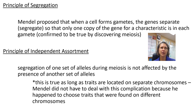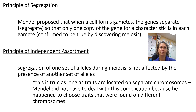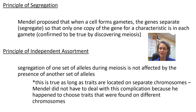The last principle is independent assortment. This says that one set of characteristics is not affected by the other set. Just because a plant is tall doesn't mean it will also have green pods, and just because it is short doesn't mean its pods will be yellow — they're always separate. This is true as long as the genes are on different chromosomes. Mendel just happened to choose the traits found on different chromosomes. If he hadn't, it would have messed up his results and he may not have figured it out. That was one of the miraculous things about this experiment.